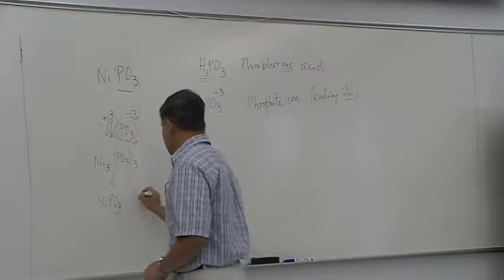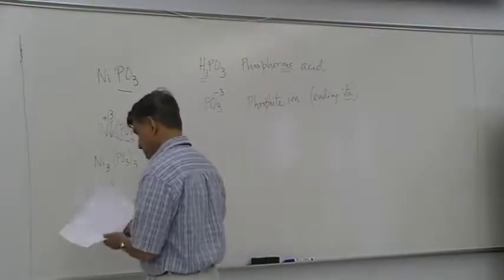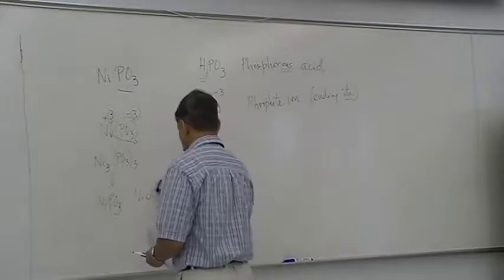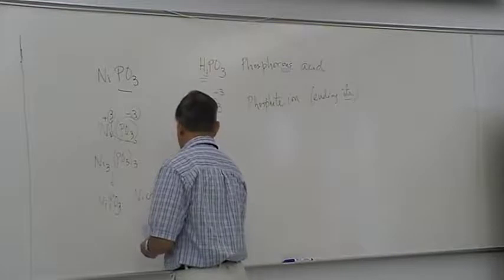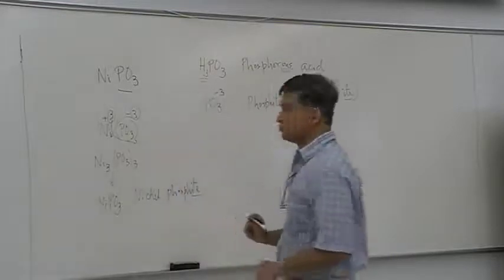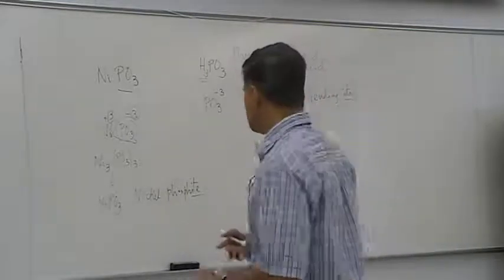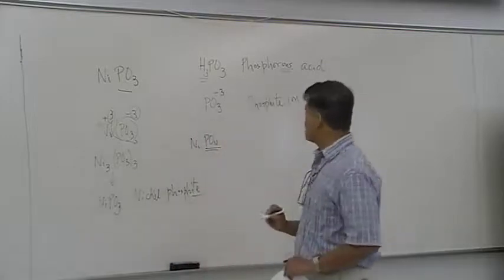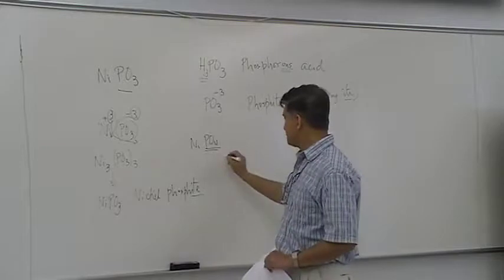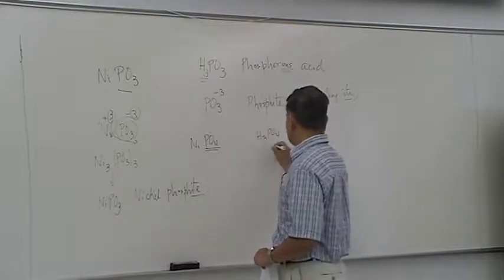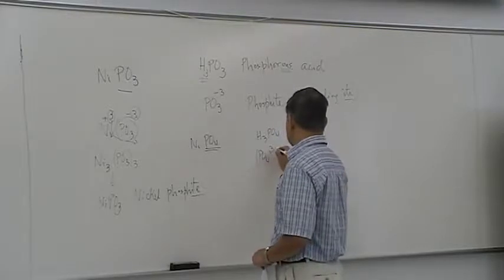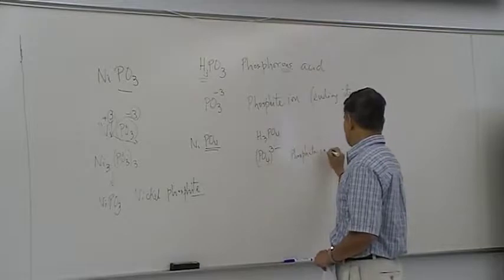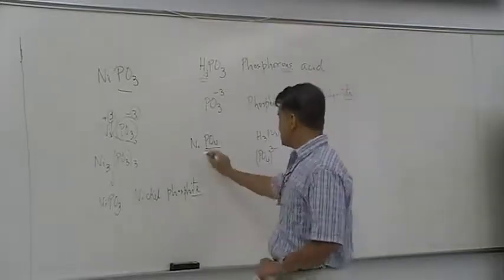And this is called nickel phosphite. So don't get confused between phosphite and phosphate. In order to get phosphate, you'd have this formula, NiPO4. So this is coming from phosphoric acid, IC acid, by getting rid of three hydrogens. So basically you get PO4 3 minus. And this is called phosphate ion. So this compound is going to be nickel phosphate.